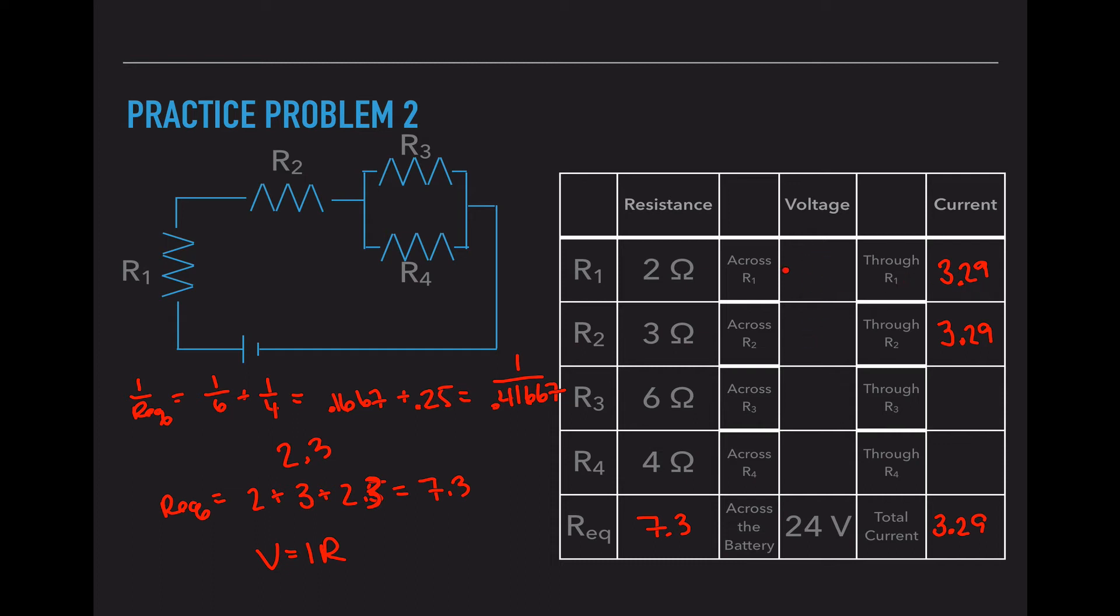So V equals I times R. 3.29 times 2, which is 6.58. 3.29 times 3, which is 9.87. So 6.58 plus 9.87 is a value of 16.45. So I started out with 24 volts. I've used 16.45 volts. So I have 7.55 volts left.